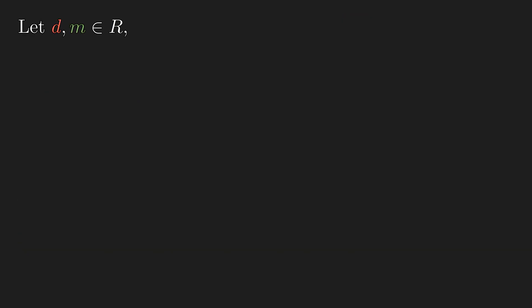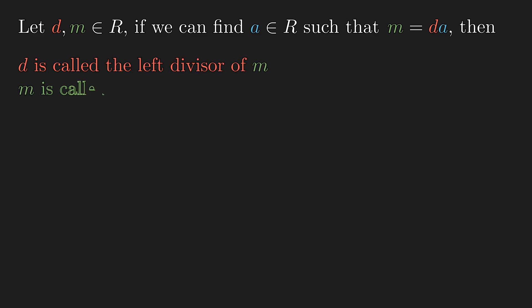Let d and m be any two elements in a ring. If we can find a in the ring such that m is equal to d times a, then we say d is the left divisor of m and m is the right multiple of d. One easy mnemonic that I like to use is that d is on the left side and needs to multiply something on the right side to get m.